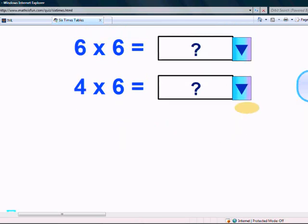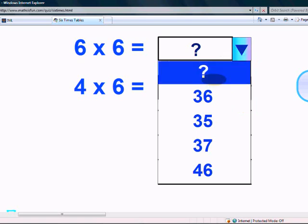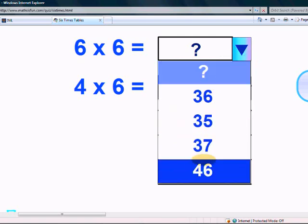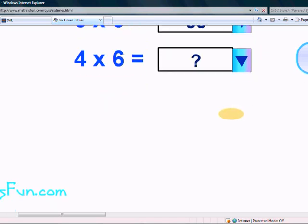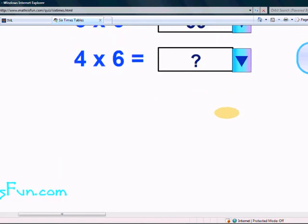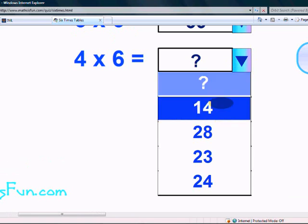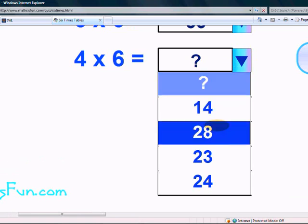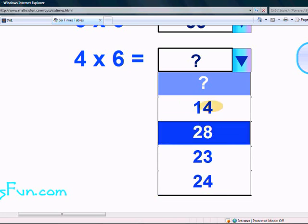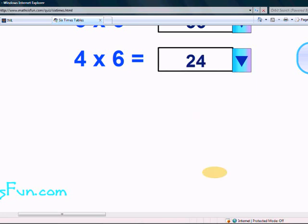What does 6 times 6 give? 36, 35, 37, or 46? Yes, 36. Last and final one. What does 4 times 6 give? Is it 14, 28, 23, or 24? Yes, it's 24.